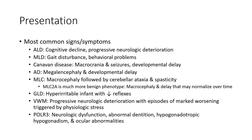Vanishing white matter — progressive neurologic deterioration with episodes of rapid worsening triggered by physiologic stress. POLR3 — neurologic dysfunction, abnormal dentition, hypogonadotropic hypogonadism, and ocular abnormalities.